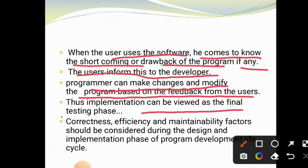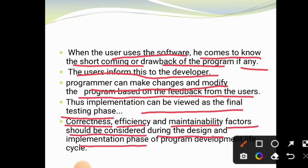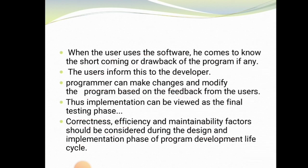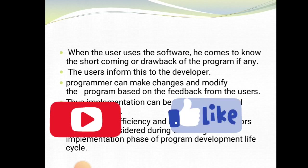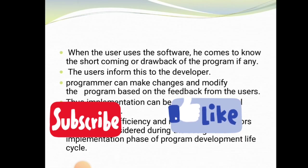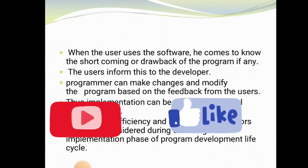Thus, implementation can be viewed as the final testing phase. The correctness, efficiency, and maintainability factors should be considered during the design and implementation phase of the program development life cycle. While developing a program, we need to consider these three factors. This class is completed. If you have any doubts, please comment in the comment section. For more videos, please subscribe to my channel. Thank you.